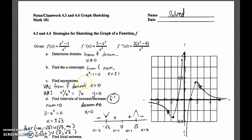Next we have the asymptotes. The vertical asymptote comes from the denominator — just like the domain restriction, x cannot equal zero, which causes a vertical asymptote at x = 0. The horizontal asymptote comes from the highest power in the numerator divided by the highest power in the denominator, which reduces to 1/x. Whenever the power in the numerator is smaller than that of the denominator, you get a horizontal asymptote of y = 0, and that's sketched in as well.